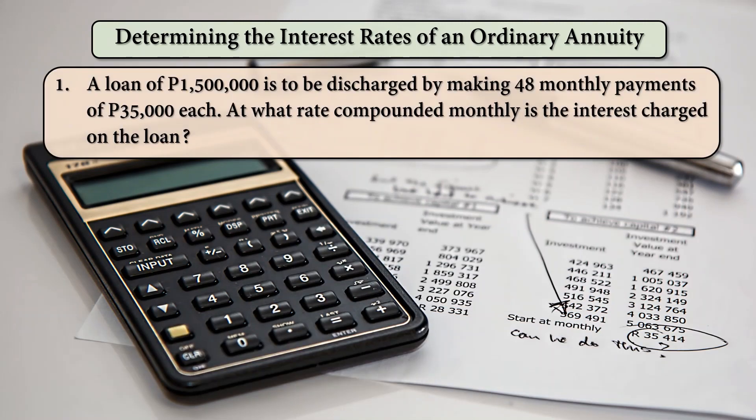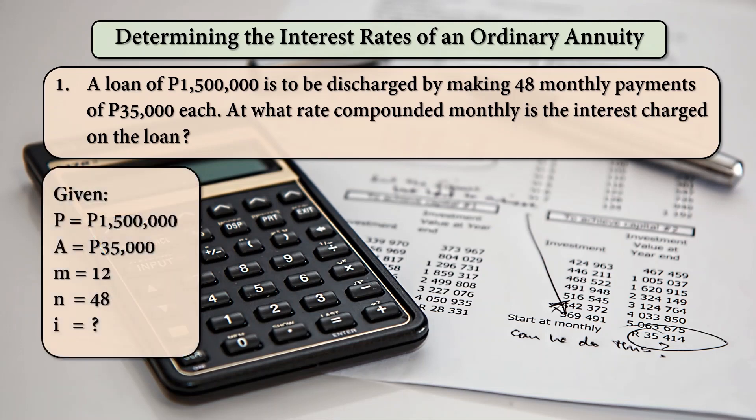For example, a loan of 1,500,000 is to be discharged by making 48 monthly payments of 35,000 each. At what rate compounded monthly is the interest charged on the loan? Given, our P is 1.5 million, A is 35,000, M is 12, and N is 48.